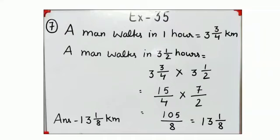15 times 7 is 105. We will multiply the denominators 4 and 2, which is 8. 105 upon 8, convert to mixed fraction again. 13 and 1 by 8 kilometers is the answer.